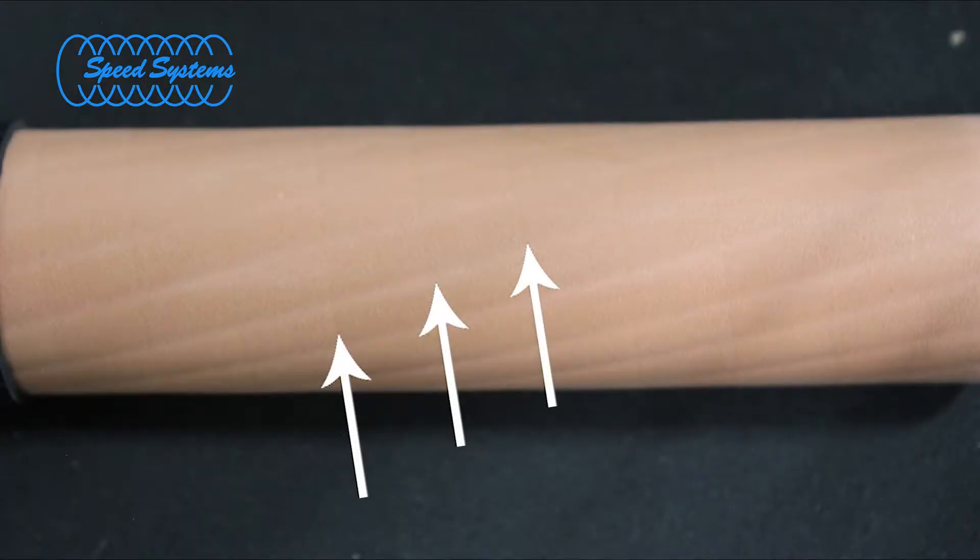You may see a spiral pattern on the insulation. Rub your thumbnail along the insulation to ensure that it is just a shadow left by the impression of the blade and not a cut into the insulation.